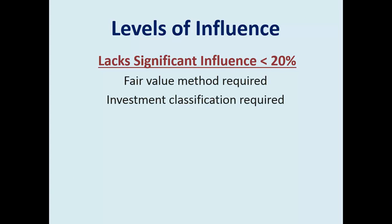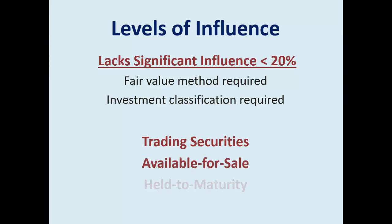Levels of influence: if you have less than 20%, you're required to use the fair value method, and investment classification is required. The three classifications are trading, available for sale, and held to maturity. This all has to do with intent — what you intend to do with it. If you intend to buy it today and sell it tomorrow for a quick gain, it's classified as trading. But the majority of corporations invest for the long term, which would be either available for sale or held to maturity.